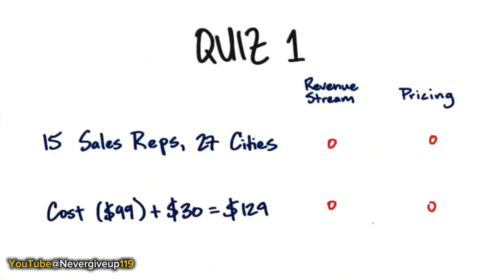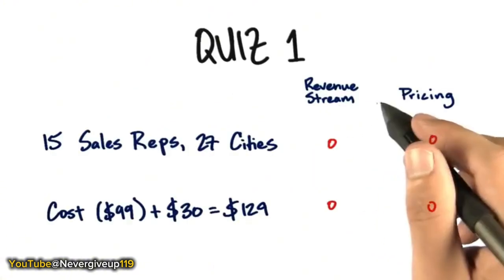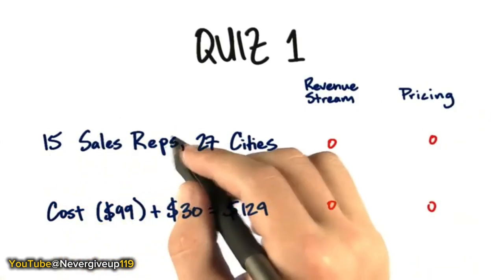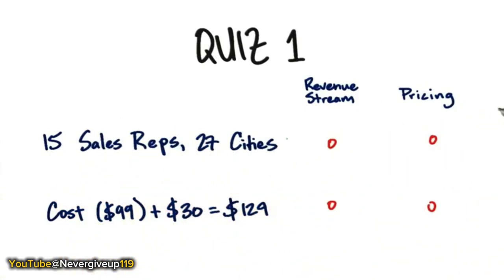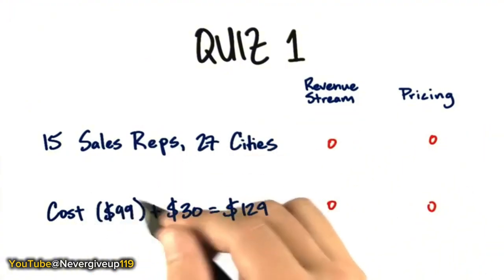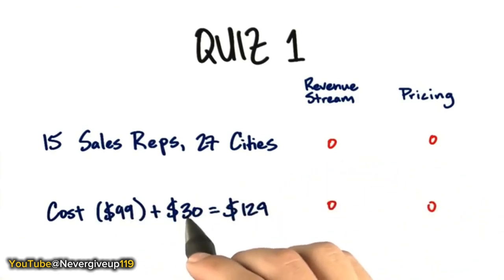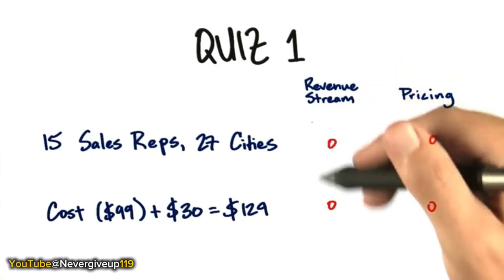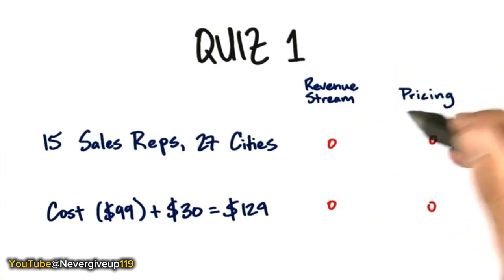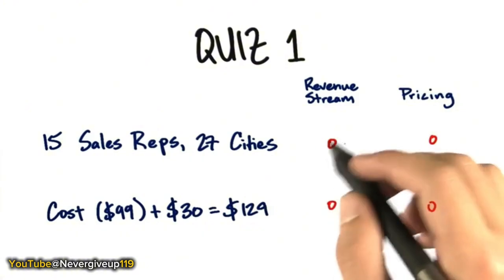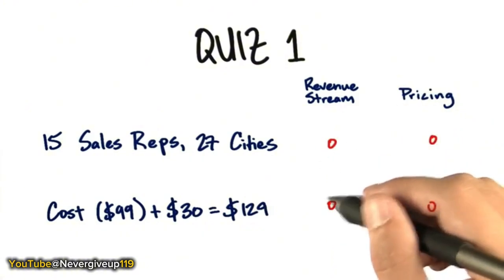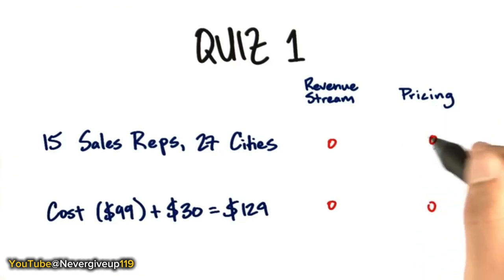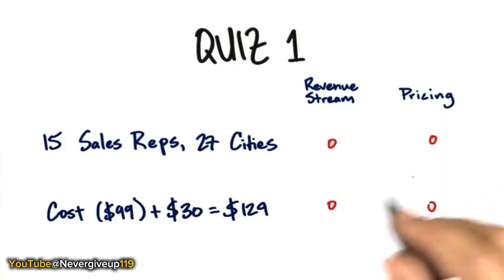Let's take a look at an example. Imagine you have 15 sales reps covering 27 cities in the United States, traveling constantly. Your product has a material cost of $99 and you've added a $30 gross margin, so you sell it for $129. Which part was the revenue stream and which was the pricing tactic? Are the sales reps in 27 cities the revenue stream, or is the cost-plus-$30 the revenue stream? Was the pricing tactic the sales rep, or was it the cost plus the gross margin?